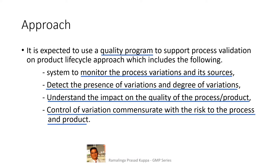Control of variation should be commensurate with the risk to the process and product. Based on scientific justifications, control of variations should be prescribed. Justifications can best be arrived at using ICH Q9 tools such as FMEA, FMECA, HAZOP, etc. HACCP and PHA can also be used.